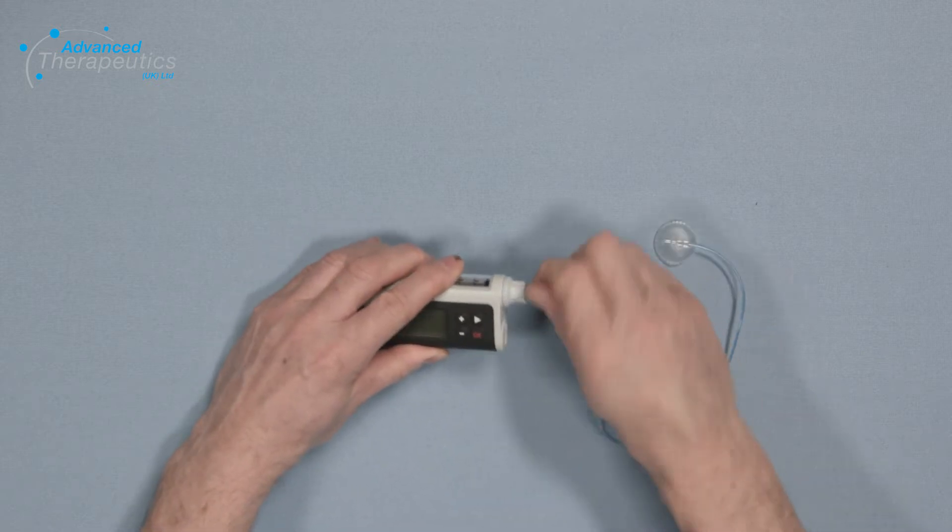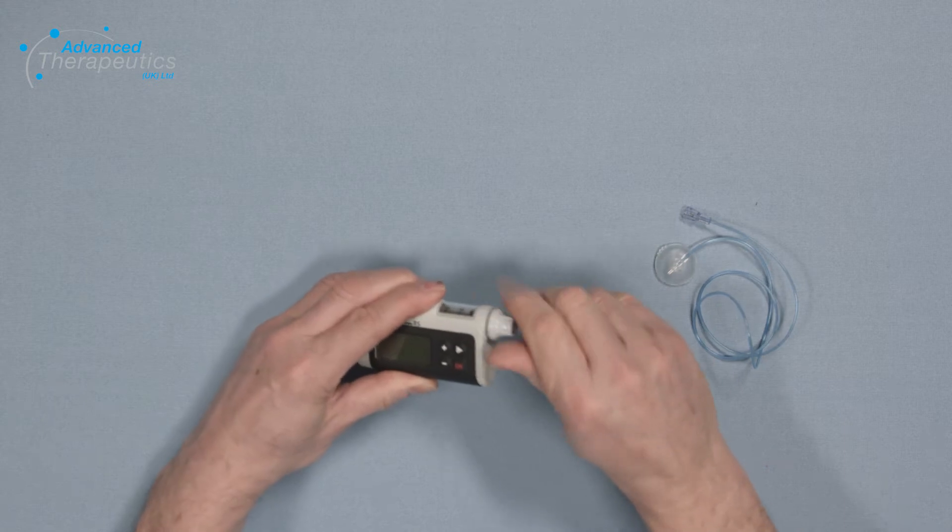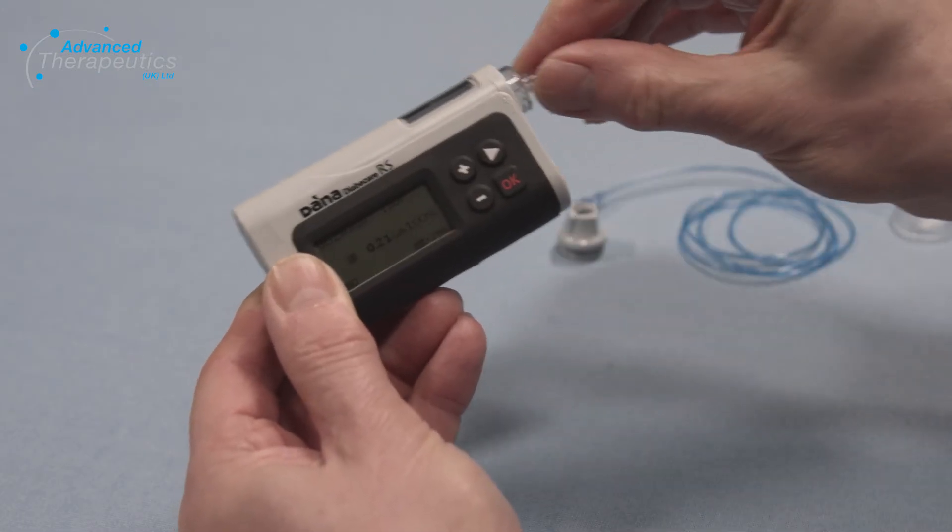First, you need to remove the old tubing. Unscrew the adapter clockwise. Then remove the old reservoir.